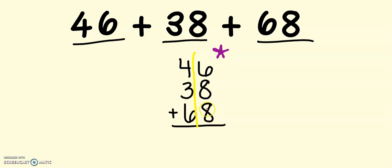Now, in this case, I see that I have a double. And I know my doubles really well. I know that 8 plus 8 gives me 16. Now I just need to add 6 more on. So 16, 17, 18, 19, 20, 21, 22. Let me write that over here.